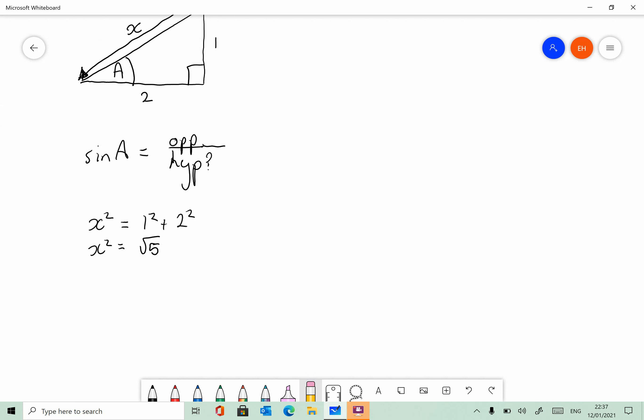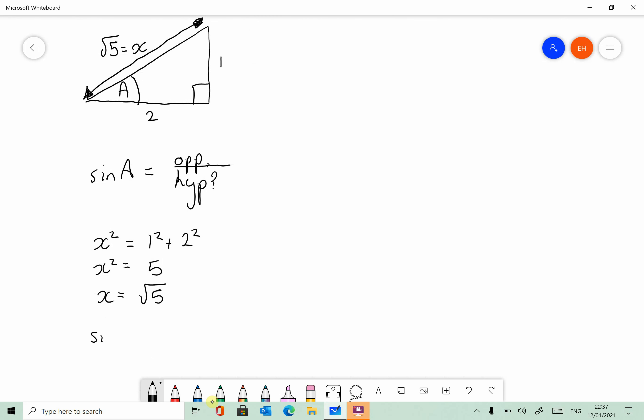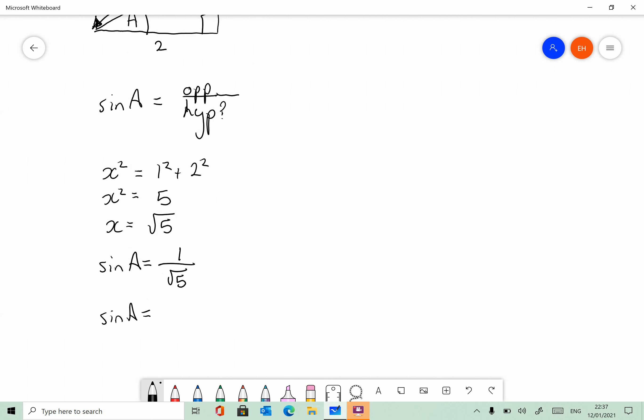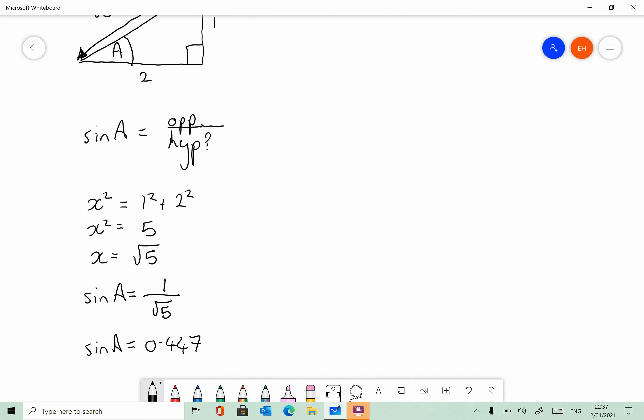So I'm going to call that side there x. So x squared is equal to 1 squared plus 2 squared. So x squared equals the square root of 5. Sorry, x is equal to 5. Sorry, without jumping the gun. Again, if you look at the clock, we're now approaching 11 o'clock. So it's 5 is x squared. So x is equal to the square root of 5. So that's the square root of 5. So now we can very easily say that sin of A is equal to the opposite, which is 1, all over the hypotenuse, which is the square root of 5. So sin A is equal to 1 over the square root of 5, equals 0.447. Yeah, nice. So that's how we do question 7, part 1.